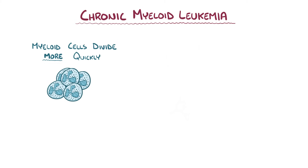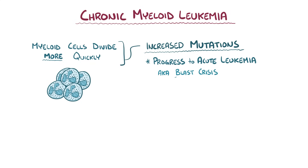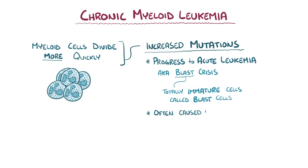Because these CML cells divide quicker than they should, there's a high chance that further genetic mutations can happen, and if that happens, CML might progress and accelerate into a more serious acute leukemia, which is called a blast crisis, because the totally immature cells of acute leukemias are referred to as blasts. A lot of cases of these blast crises include the formation of a trisomy on chromosome number 8, or the doubling of the Philadelphia chromosome.